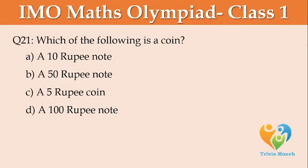Which of the following is a coin? A: a 10 rupees note, B: a 50 rupees note, C: a 5 rupees coin, D: a 100 rupees note.